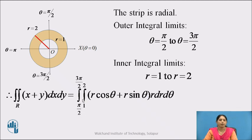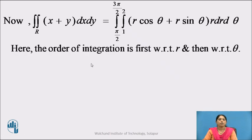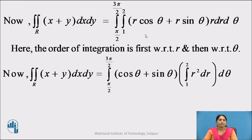Therefore, the integral becomes: integration from π/2 to 3π/2, integration from 1 to 2, of (R cos θ + R sin θ) × R dr dθ. The order of integration is first with respect to R and then with respect to θ. To integrate first with respect to R, we take R common from the bracket. Since θ is treated as constant with respect to R, it can be taken outside the inner integral. So it is written as: integration from π/2 to 3π/2 of (cos θ + sin θ) × integration from 1 to 2 of R² dr, dθ.